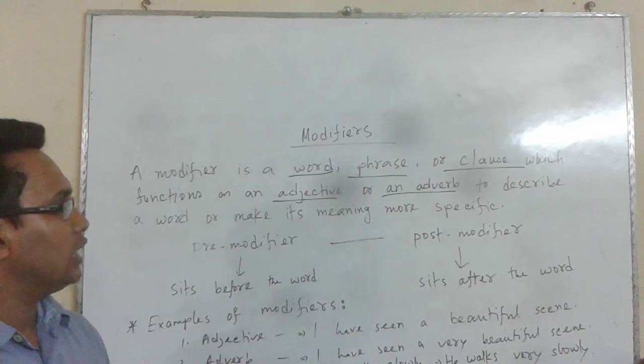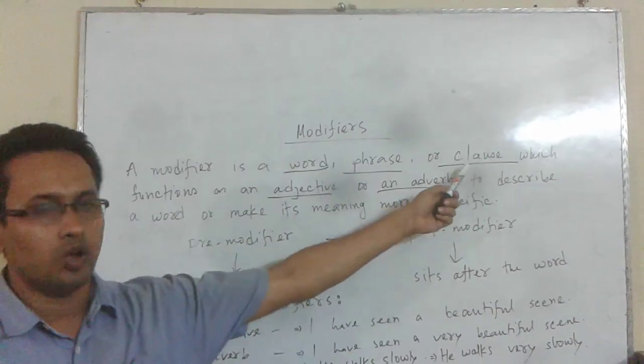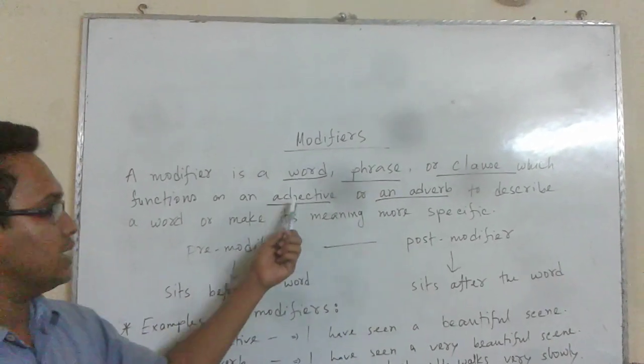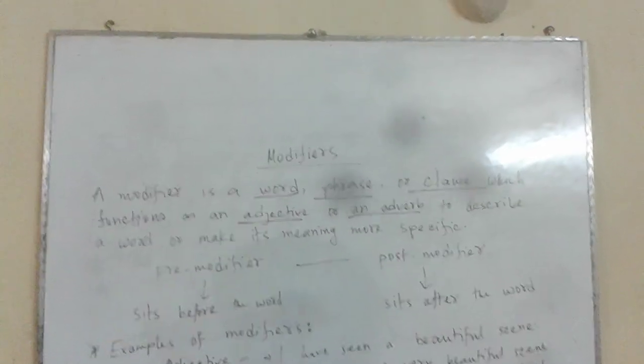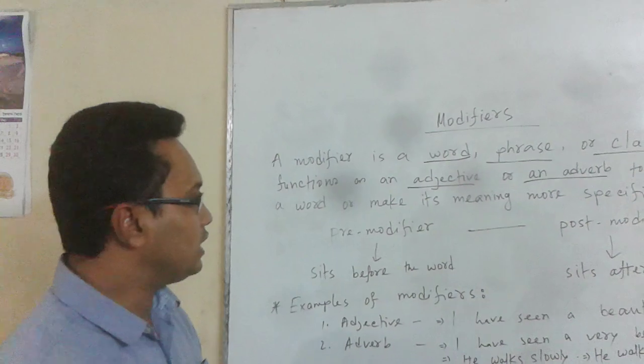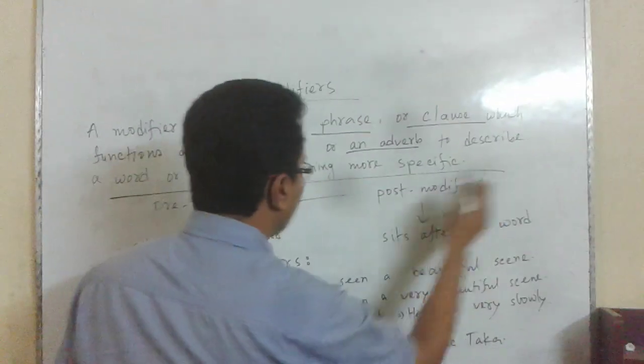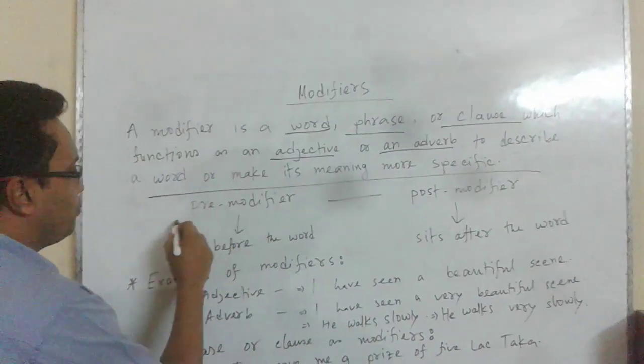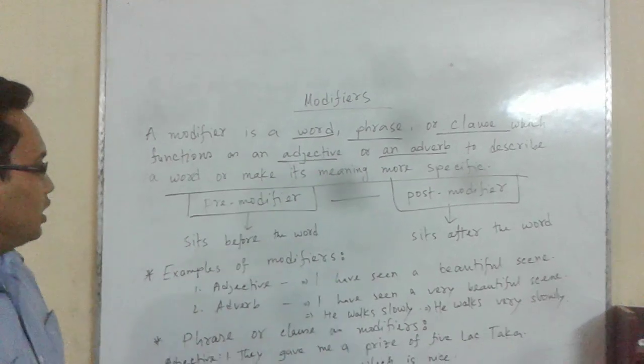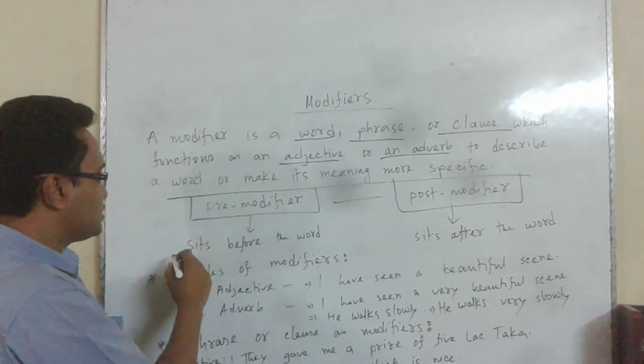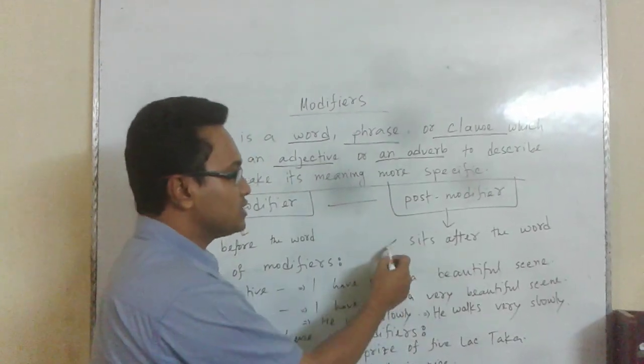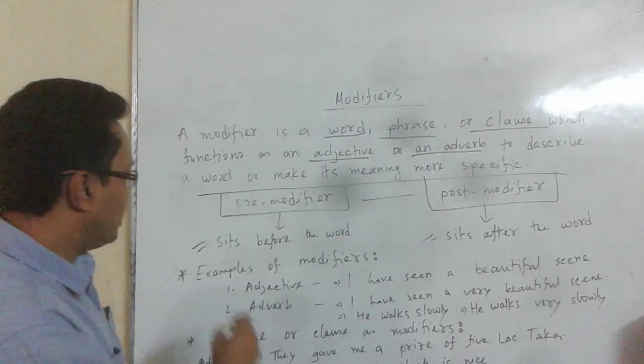Modifier can be word, phrase or clause and it functions as adjective or an adverb. According to their position in a sentence it can be divided in two types. One is pre-modifier and the other is post-modifier. A pre-modifier sits before the word and post-modifier sits after the word.